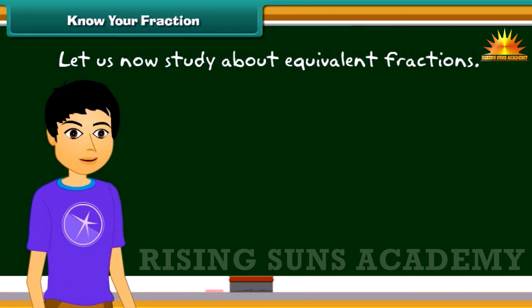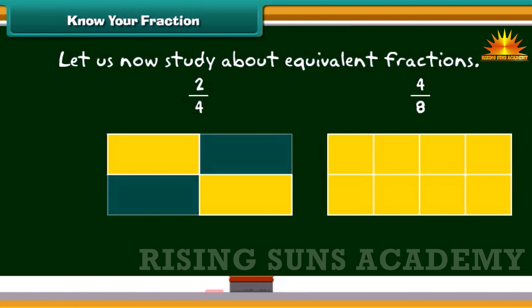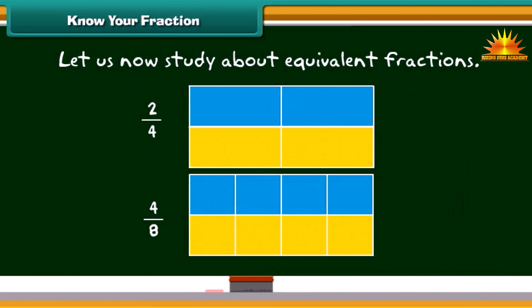Let us now study about equivalent fractions. Look at the rectangular boxes given below. In the first figure, two by four boxes are blue. While in the second figure, four by eight boxes are blue. Observe carefully. The blue colored parts of both the boxes are the same. This means two by four must be the same as four by eight. So, two by four and four by eight are equivalent fractions.